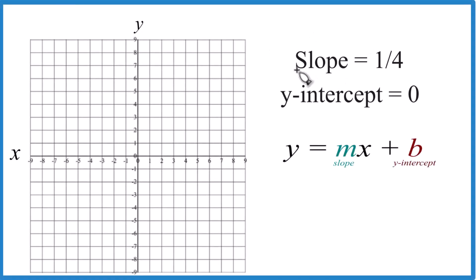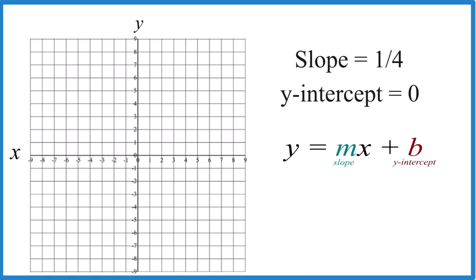Let's graph the line for when we have a slope of one-fourth and our y-intercept, that's zero. So here's how you can do it. So we have a y-intercept of zero here. That just means the line's gonna cross the y-axis here at zero, that's our first point.